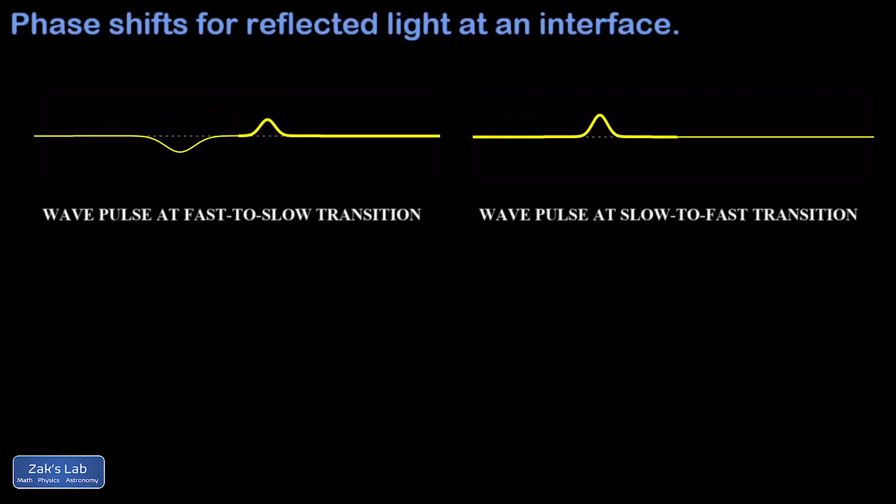In this video we discuss two different types of reflections for light at an interface between two media, and we discuss the phase shifting of the light at each of these reflections. The first type of reflection in the left animation is the fast-to-slow reflection.